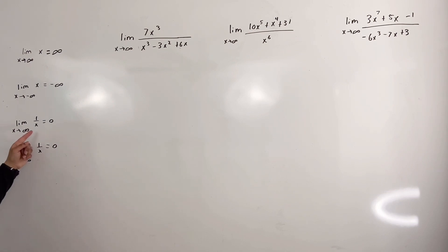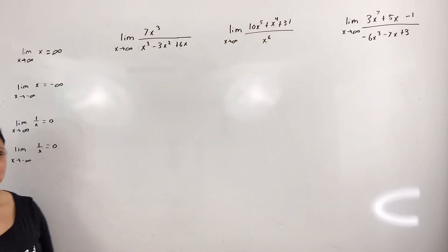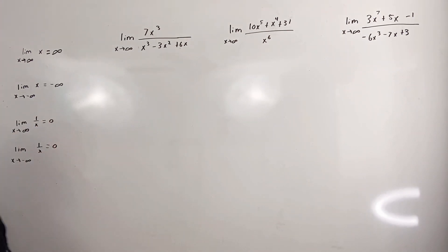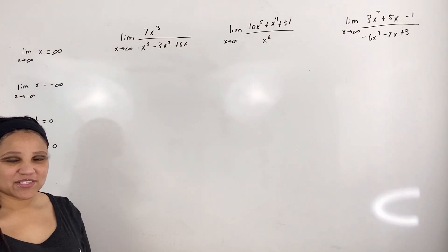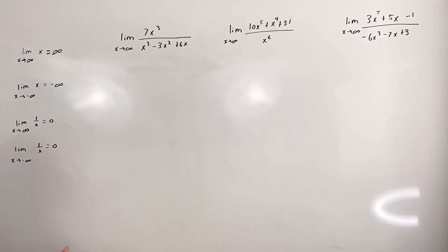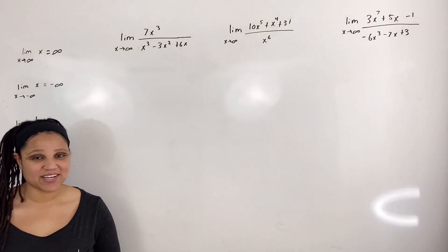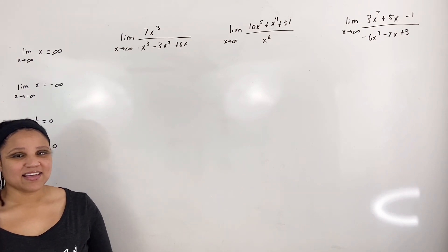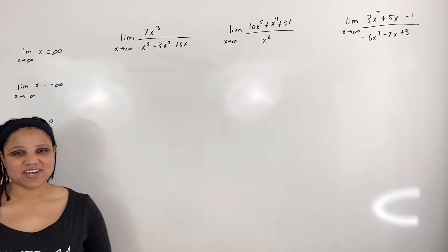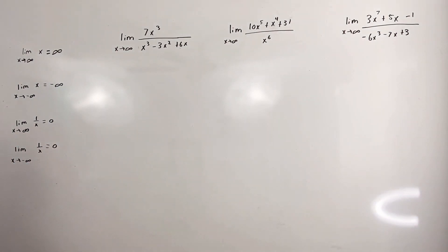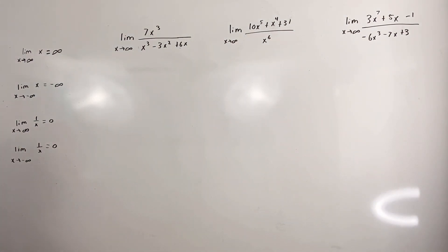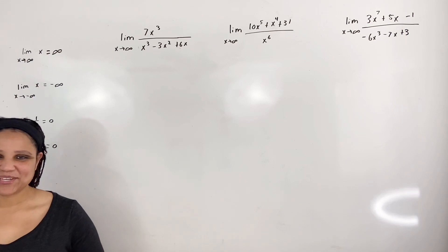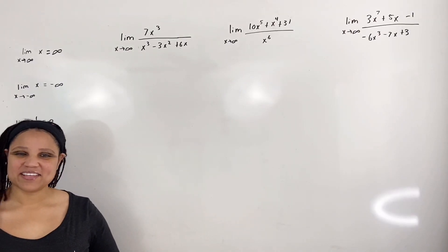Now let us look at 1 over x. We know that if we plug in a very large positive number in the denominator, then the entire fraction will get smaller and smaller until it reaches zero. Similarly, if we plug in a very large negative number in the denominator, it will eventually get closer and closer to zero. Thus the limit as x approaches positive infinity of 1 over x is equal to zero, and the limit as x approaches negative infinity of 1 over x is equal to zero.